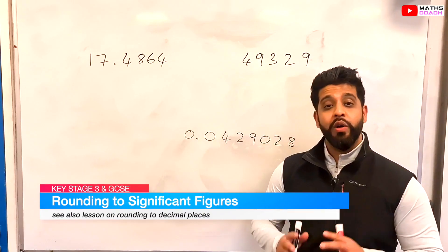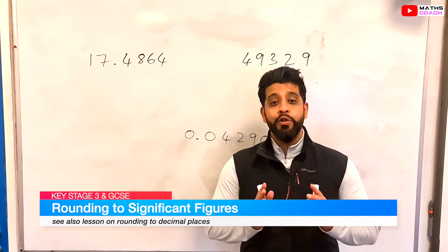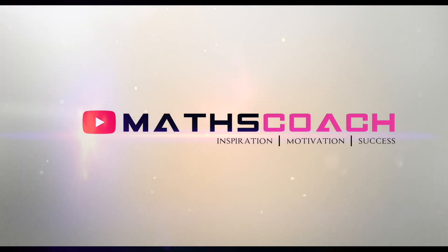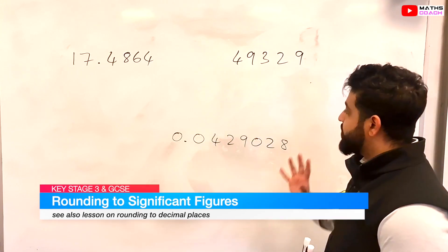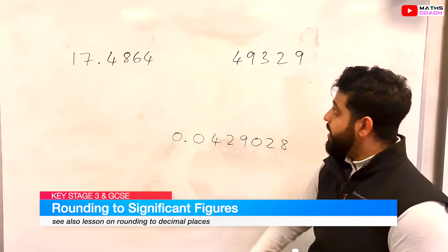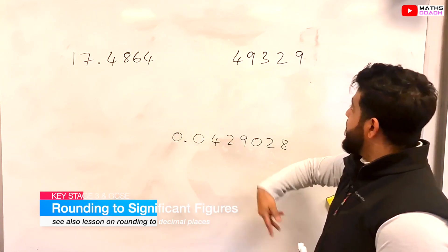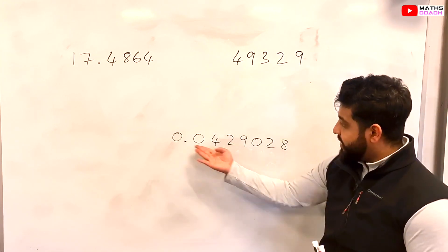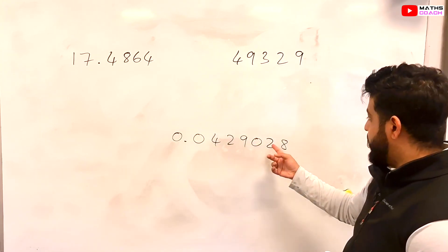Hello and welcome to this lesson where we'll be looking at how to round numbers to significant figures. Behind me we have three different examples of numbers: 17.4864, then 49329, and then a decimal, 0.0429028.